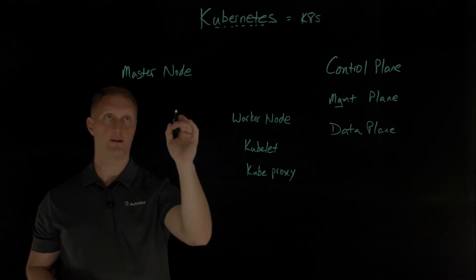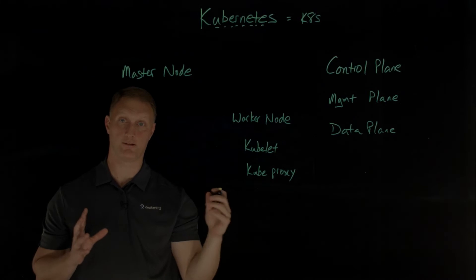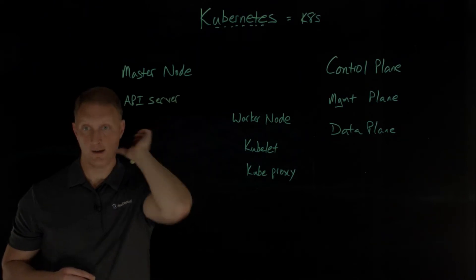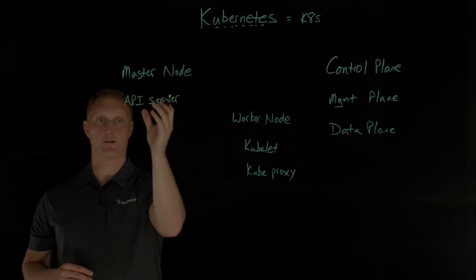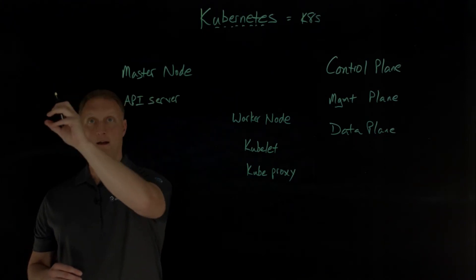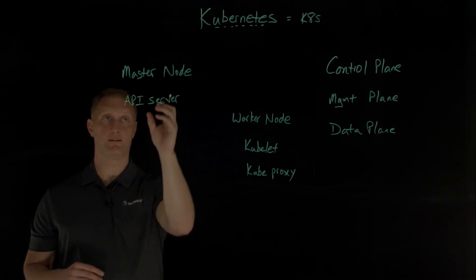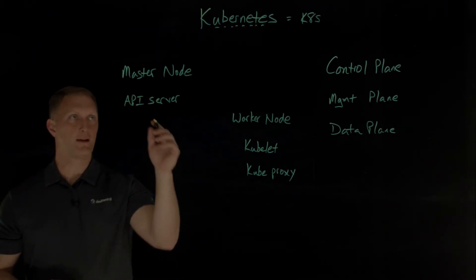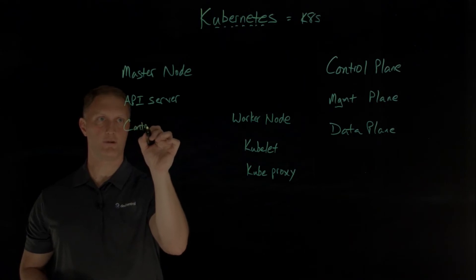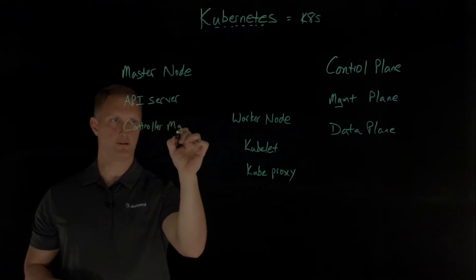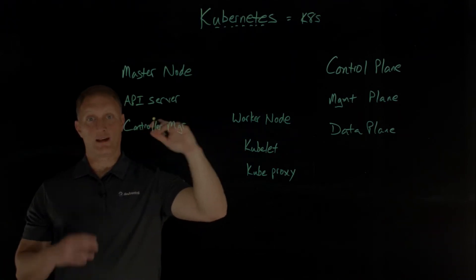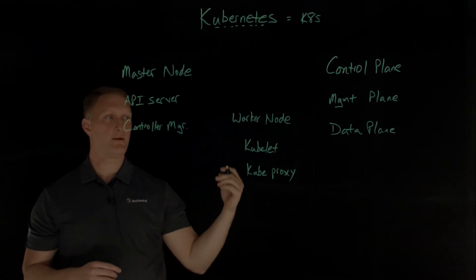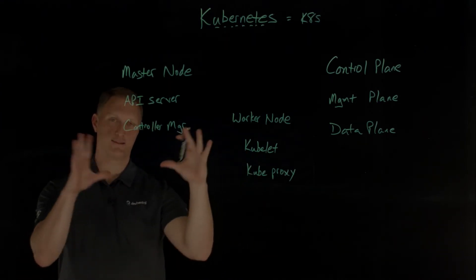The master node has a few key components. One is the API server, which communicates with either a graphical user interface, external APIs, or a command line interface — it exposes the Kubernetes API to the outside user world. Then there's the controller manager, which keeps an eye on the whole cluster and checks to see if something needs to be repaired or restarted.